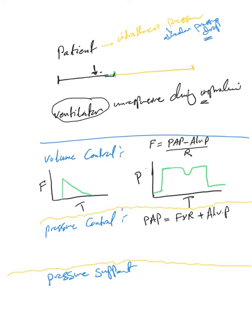So what's going to happen depends on which mode we are using. In volume control, the flow depicted against time is the target, so the ventilator wants to keep this kind of flow.